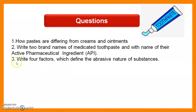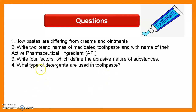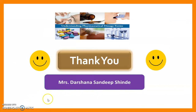Question 3: Write four factors that define the abrasive nature of a substance. The cleaning power of an abrasive substance depends on its size, shape, hardness, and brittleness. Question 4: What type of detergents are used in toothpaste? Sodium lauryl sulfate and magnesium lauryl sulfate are used in a specific concentration when making toothpaste. Thank you very much for attending this practical session.